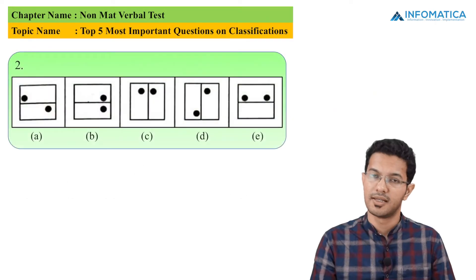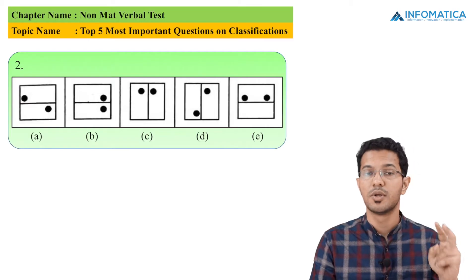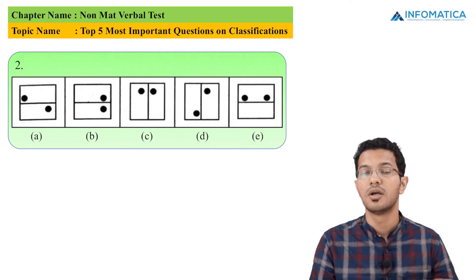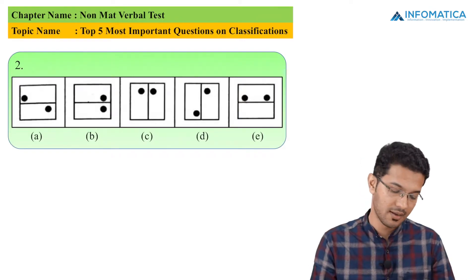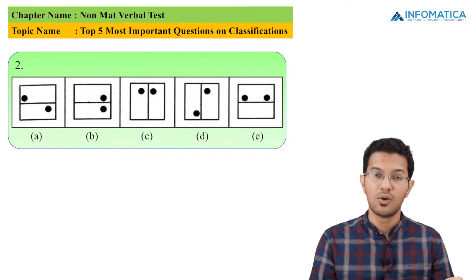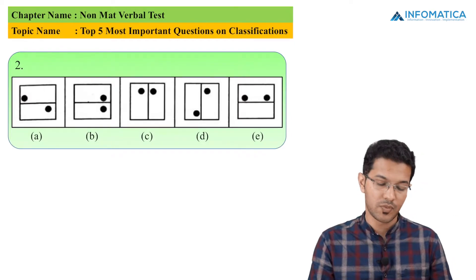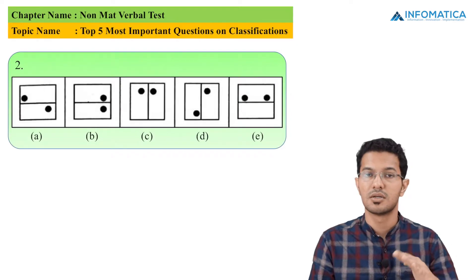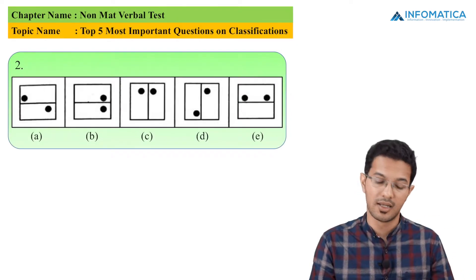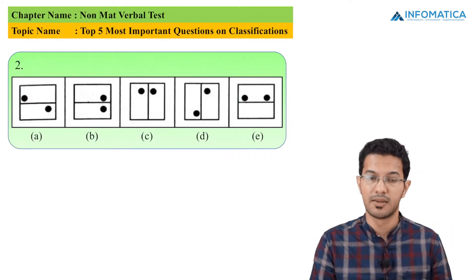Let us look at the next MCQ. There is a square, there is a division, and there are two circles which are on opposite sides of the division. This is option A. Option B has a similar case. The same pattern is for option C and option D.